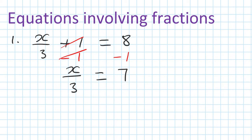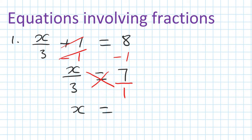Because 8 minus 1 is 7. Then the next step: if you remember, 7 is just like 7 over 1, so you can just do cross multiply. 1 times x is x, and then 3 times 7 is 21. So therefore x is equal to 21.